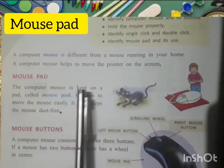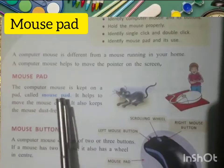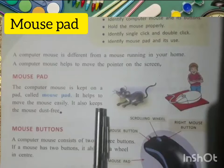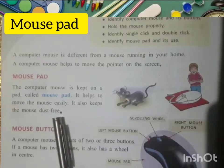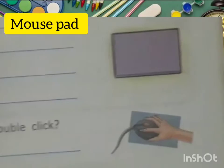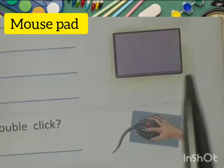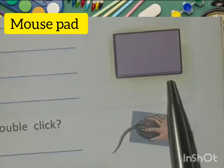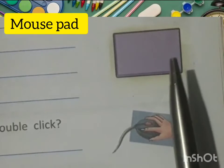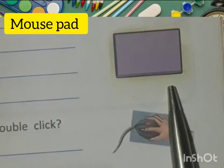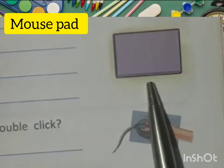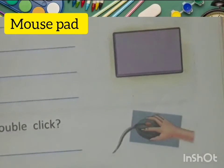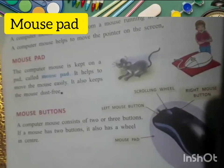The computer mouse is kept on a bed called a mouse pad. It helps to move the mouse easily. It also keeps the mouse dust free. Students, do you know what is this? This is a mouse pad. It helps to move the mouse easily and keeps it dust free.